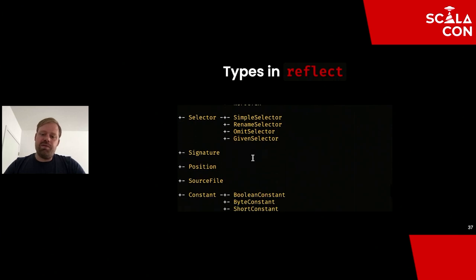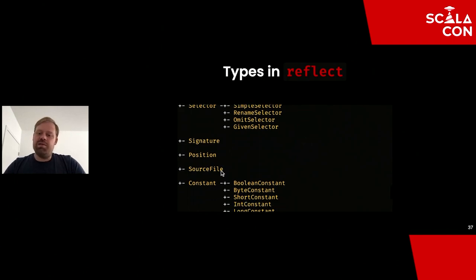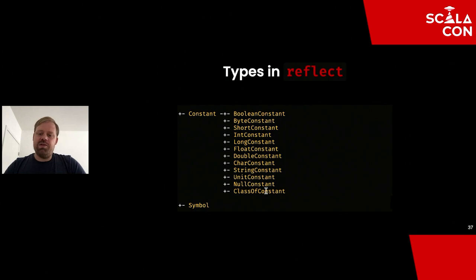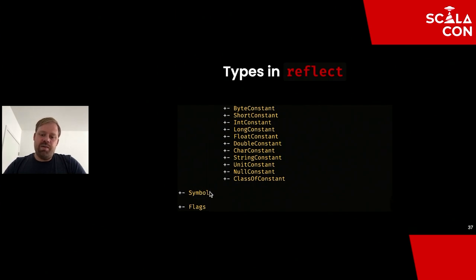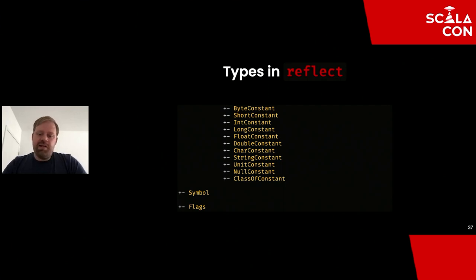The reflection API also includes Selectors for imports and exports, Signatures for JVM signatures of methods, Positions, SourceFile, Constants shared between types and terms, Symbols (unique representations of definitions that can be compared), and Flags used in symbols to mark things like private.